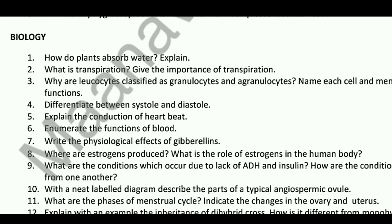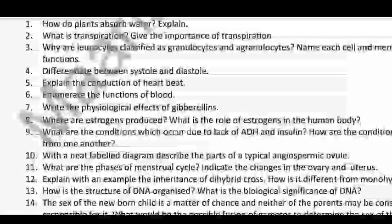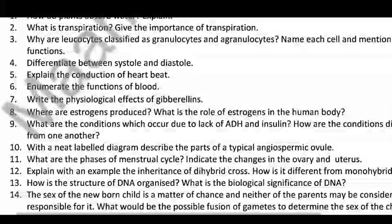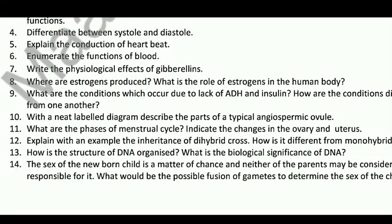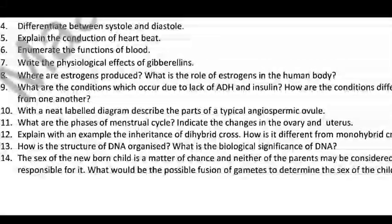What is the difference? What is estrogen produced from? What is the role of estrogen in the female body? What are the conditions which occur due to the lack of ADH and insulin? How are these conditions different from one another? With neat labeled diagrams, describe the parts of a typical angiosperm ovule. What is the span of the menstrual cycle? Indicate the changes of the ovary and uterus.